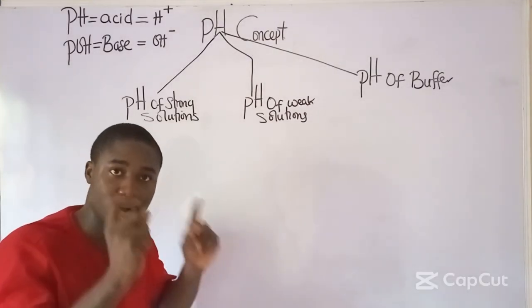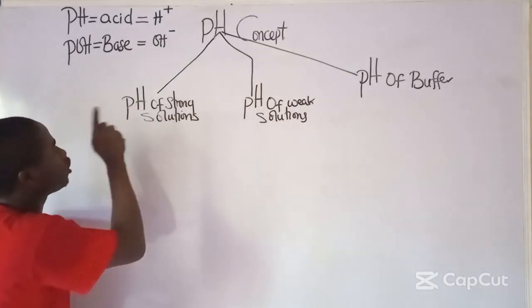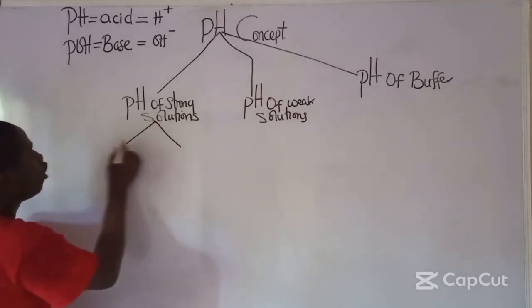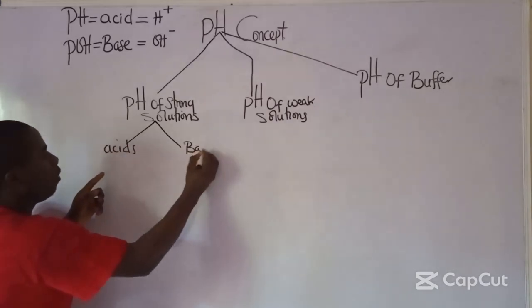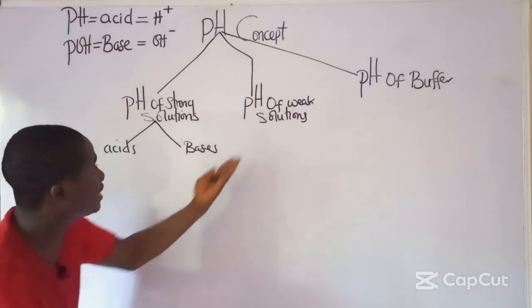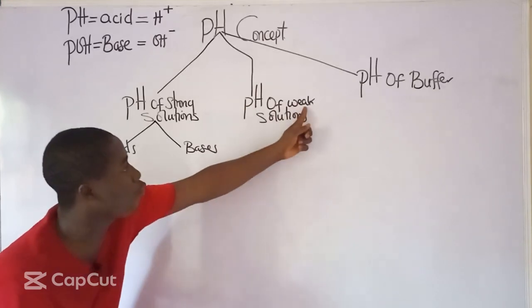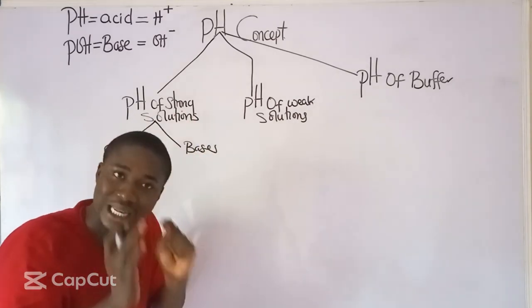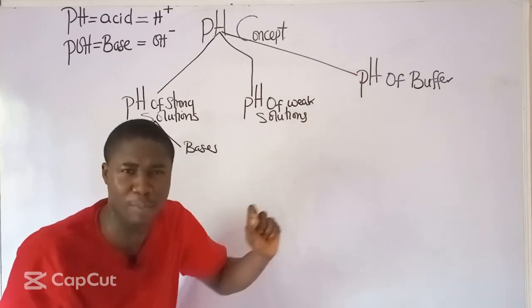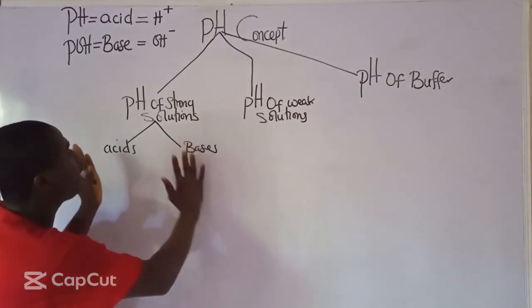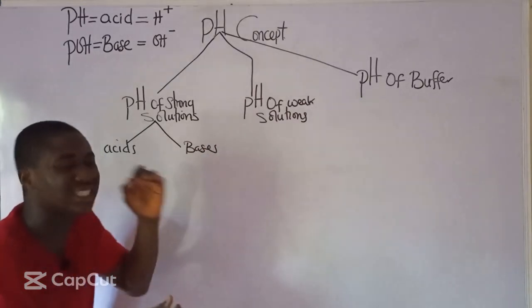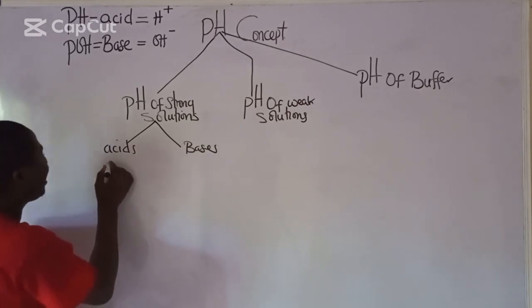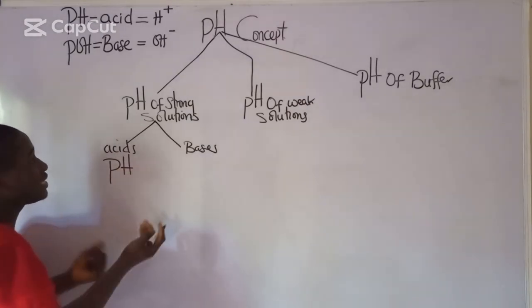Moving to the first aspect: pH of strong solutions, which can be strong acids or strong bases. The formula for pH is: pH = −log[H⁺]. Anything happening to acid must happen to base, so pOH = −log[OH⁻]. These four formulas are very important for solving pH of strong solutions.